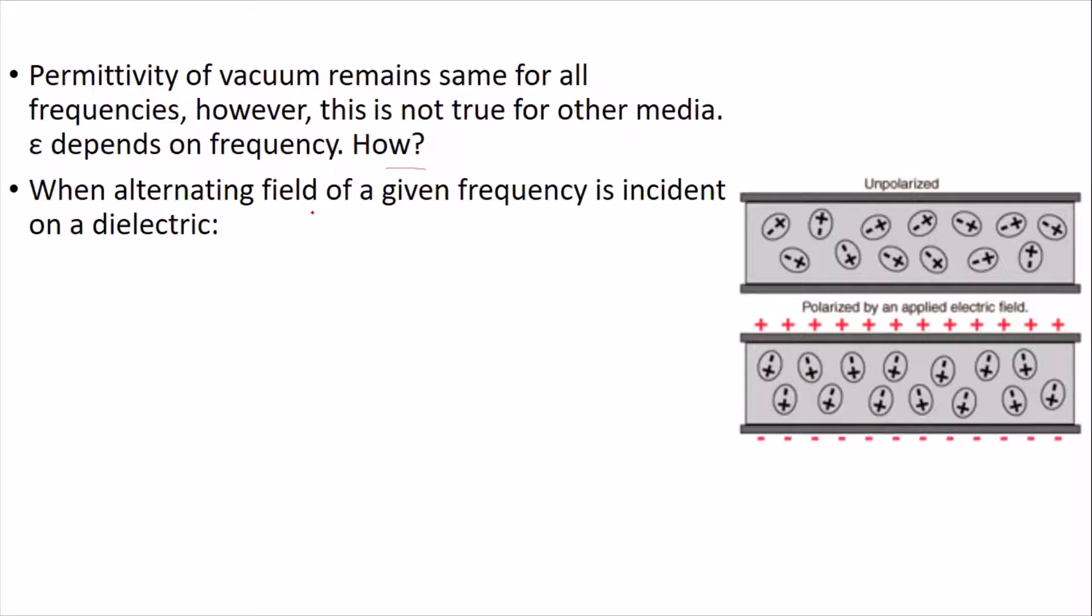When an alternating field of different frequency is incident on a dielectric, it will take some time to polarize the dielectric material. In the case when the field is static, when the field is not changing direction, when it is like a DC field, we have a positive sign over here, a negative sign over here, and it remains the same throughout. Then this material will get polarized as we have shown over here.